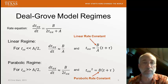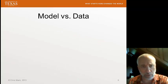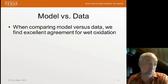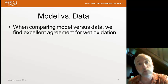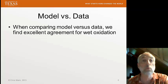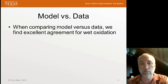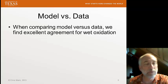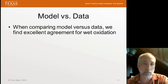Let's compare the model to data — is it a good model? You can't just derive models and say you're done. You always have to compare models to data to find out when they work and when they don't. When we do wet oxidation, we see excellent agreement over all ranges of oxide thicknesses. We can use the Deal-Grove model for wet oxidation without concern. But for dry oxidation, we find a regime where the model does not do a good job.